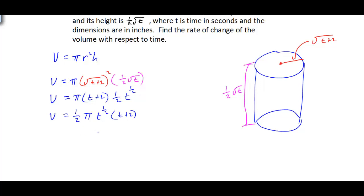We could take the derivative here, but I'm going to distribute the t to the one half inside the parentheses to make the derivative a little bit easier. The one half pi is a constant, so we leave that alone. Distributing gives us t to the one half times t, which is t to the three halves, plus two t to the one half. That is the volume for this right circular cylinder.